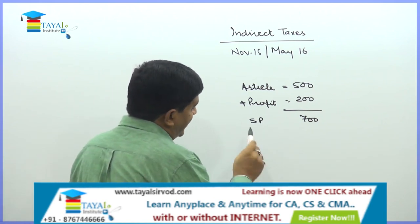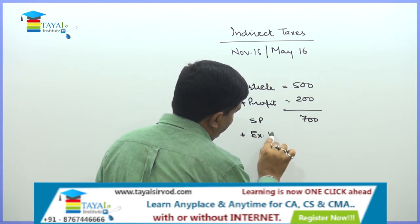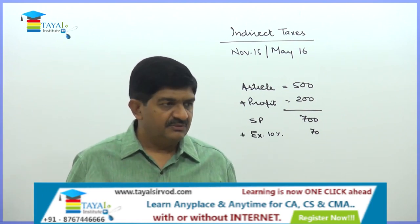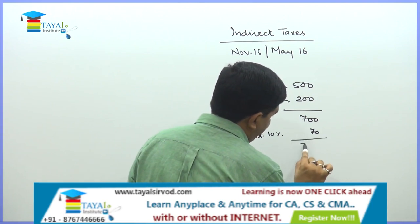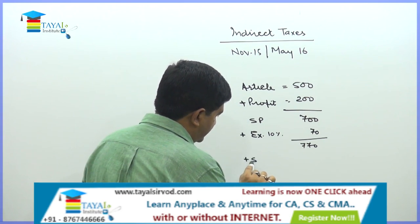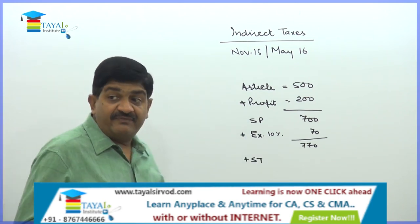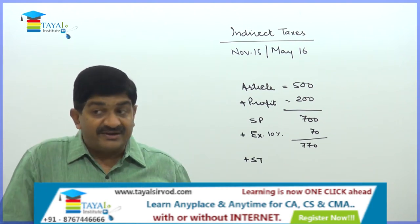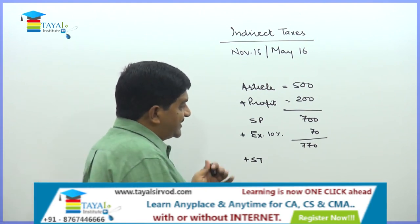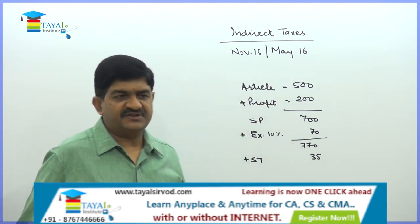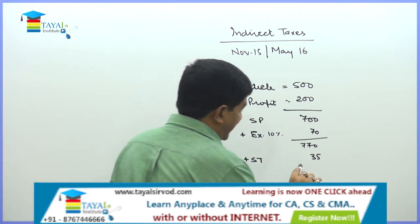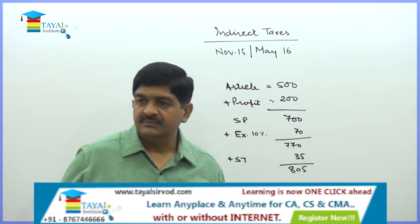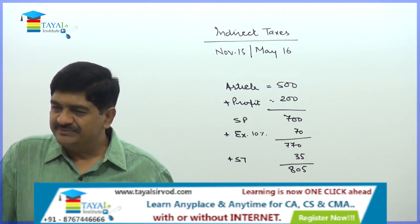We add excise duty at 10%, which is ₹70. There is also education cess and SHEC, but those are small figures so I'm not adding those. This becomes ₹770. On this, there is sales tax — which may be VAT or CST. If the sale is within the state, VAT is payable; if it is interstate, CST is payable. Assuming ₹35 is added, effectively the article reaches the retailer at ₹805. Then he adds his profit and sells to the consumer.